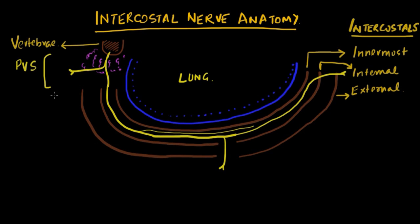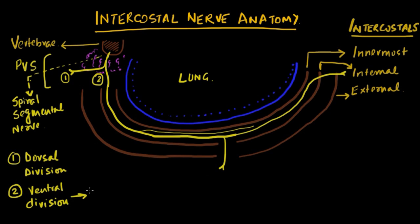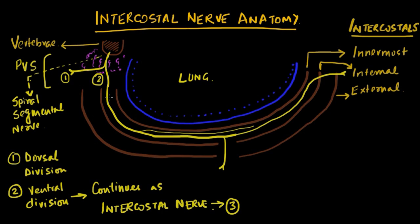Here, pointing to the spinal segmental nerve which comes through the intervertebral foramen and enters the paravertebral space — as it enters, it divides into its two main branches. The dorsal branch is marked as number one, and the ventral branch or ventral ramus is marked as number two. The ventral ramus then continues as the intercostal nerve, marked here as number three.